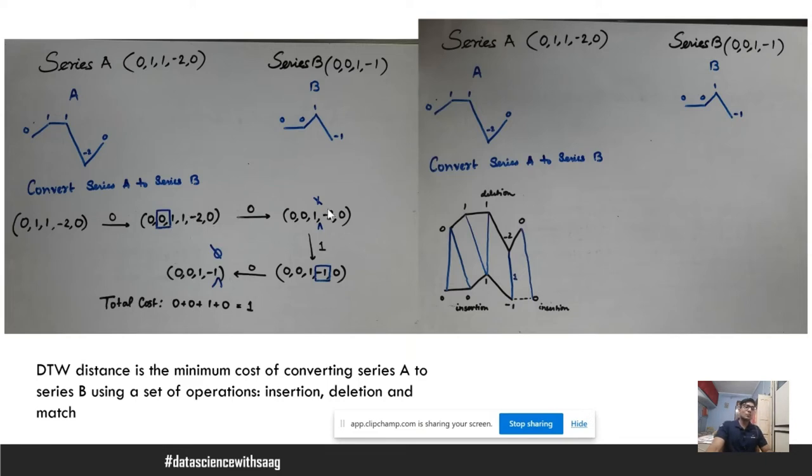Next, we are eliminating the duplicate 1. Again, eliminating a duplicate from the adjacent position has a cost of 0. Now we are converting -2 to -1. This is a shift from -2 to -1. The difference would be 1. So the cost would be 1. Finally, we are eliminating 0 at the end. So again, this has 0 cost.